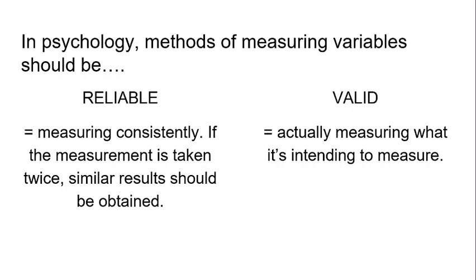if you use a ruler, for example, and you use it to measure the same thing twice, you should get the same result — otherwise you've got to really question what's wrong with your ruler. The same goes with self-report measures such as questionnaires and interviews. If you've got a questionnaire or interview that's reliable, you should be able to give it to the same person twice and get similar, if not the same, results. Otherwise, if you're getting completely different results, you've got to question what's wrong with the way you've designed it.